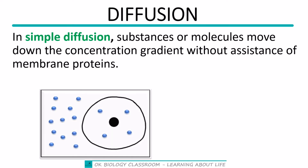I have an image here to illustrate simple diffusion. Since it is diffusion, movement is from a region of higher concentration to a region of lower concentration. In this image, there is a cell with molecules inside, and outside the cell is another region. Assuming we are talking about oxygen, the molecules outside the cell — assuming similar volumes — would have a higher concentration than inside the cell.